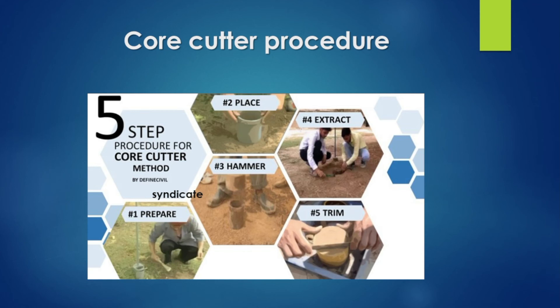We weigh the sample. We remove the metal end caps. We place and calculate the dry density. To find the dry density, we divide the mass by the volume of the mold. We use the core cutter method.